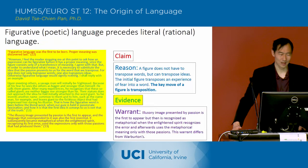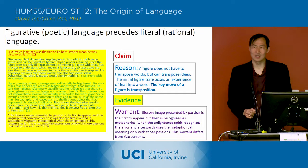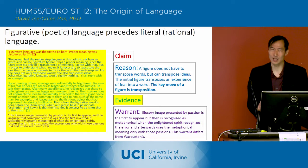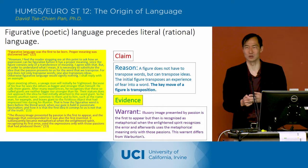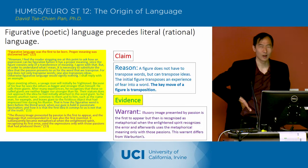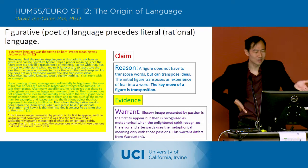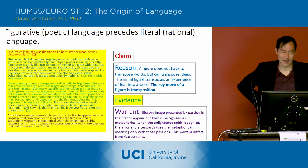That's the first part of this next argument. Then the second part is the idea that because of this link of passions to the beginning of human language, it's actually the figurative use of language that precedes the literal use of language. And this is an argument we would call from Warburton about figures of speech being at the origin of language. So Rousseau says figures of language was the first to be born; proper meaning was discovered last.